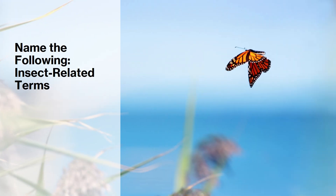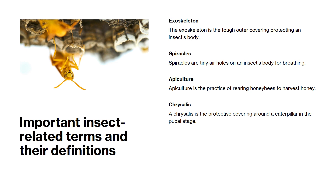Now let's name some important insect-related terms and learn what they mean. The exoskeleton is the tough outer covering on an insect's body. Spiracles are tiny air holes for breathing. Apiculture is the practice of rearing honeybees for honey. A chrysalis is the protective covering around a caterpillar during the pupal stage.